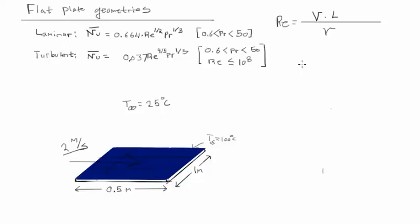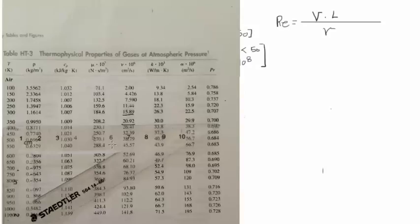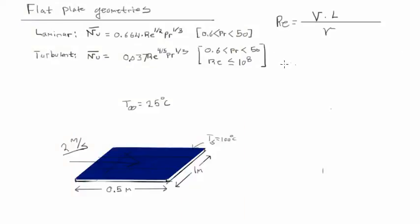So the kinematic viscosity of the fluid is not yet known. And we can figure it out by bringing up a thermal fluids table. This is a property of gases for air at atmospheric pressure, which we're assuming. And we want the kinematic viscosity at a specific temperature, which we will call the film temperature.